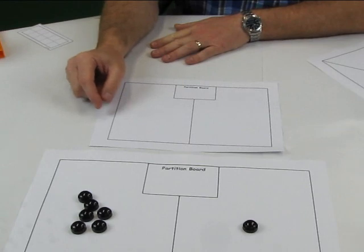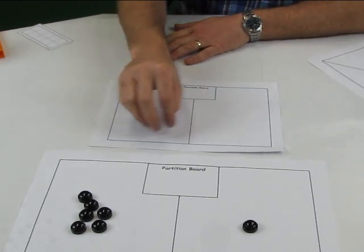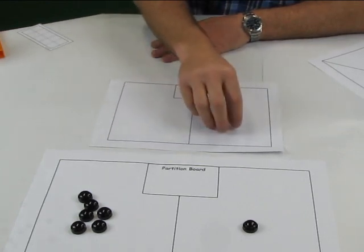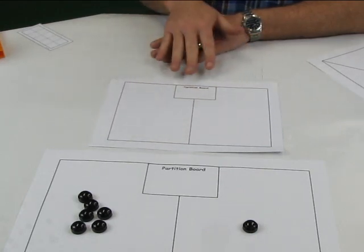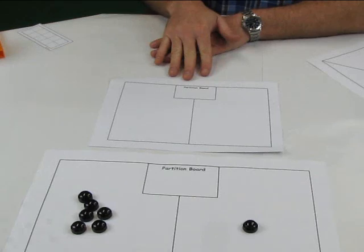Some children might be able to put symbols in there - six and one, five and two, or four and three, or vice versa. That might be a way of recording that idea.